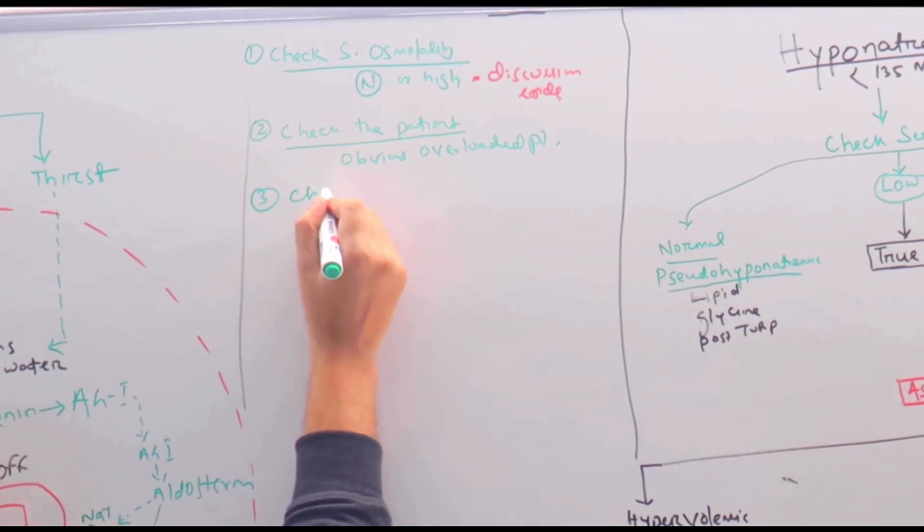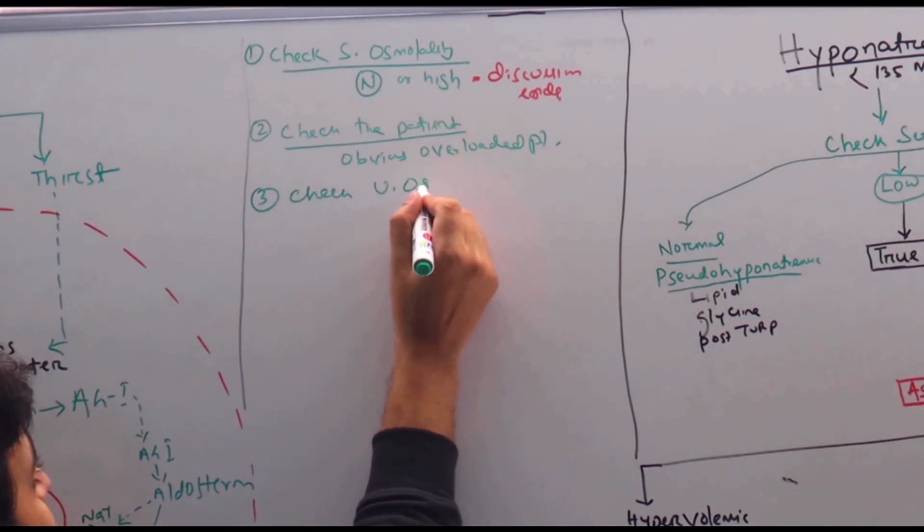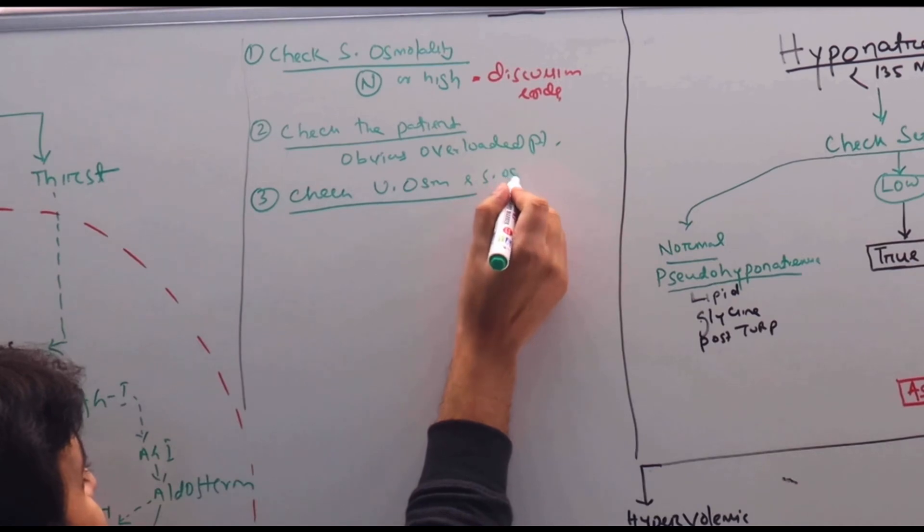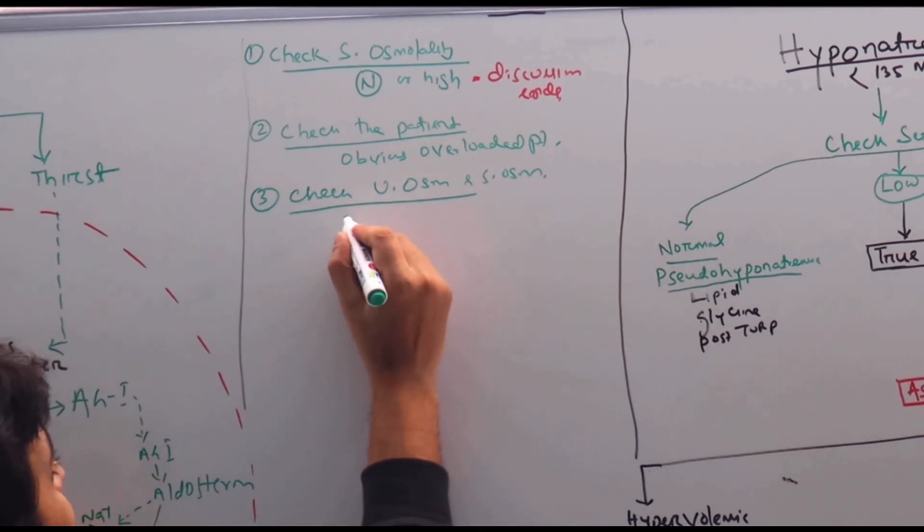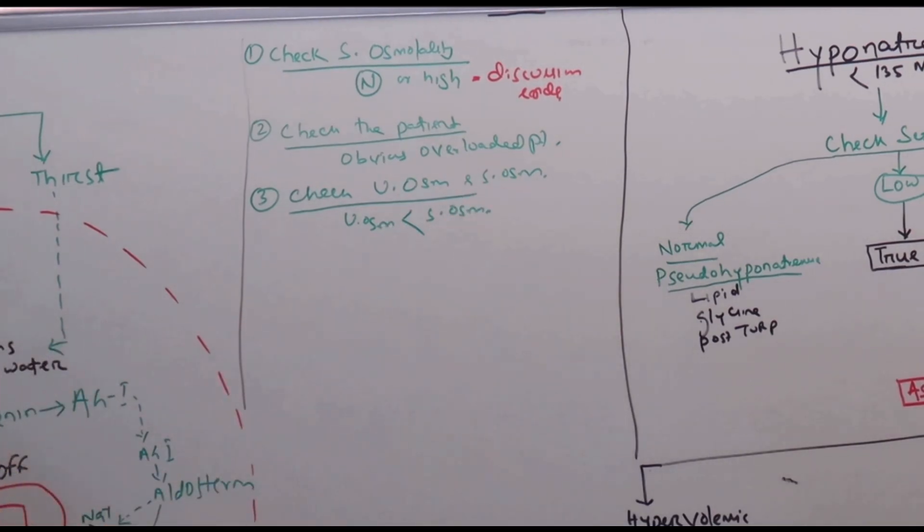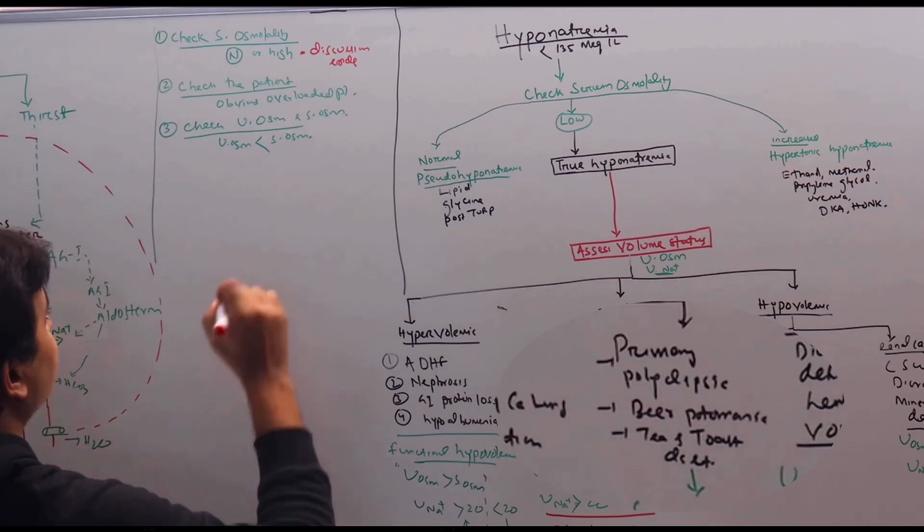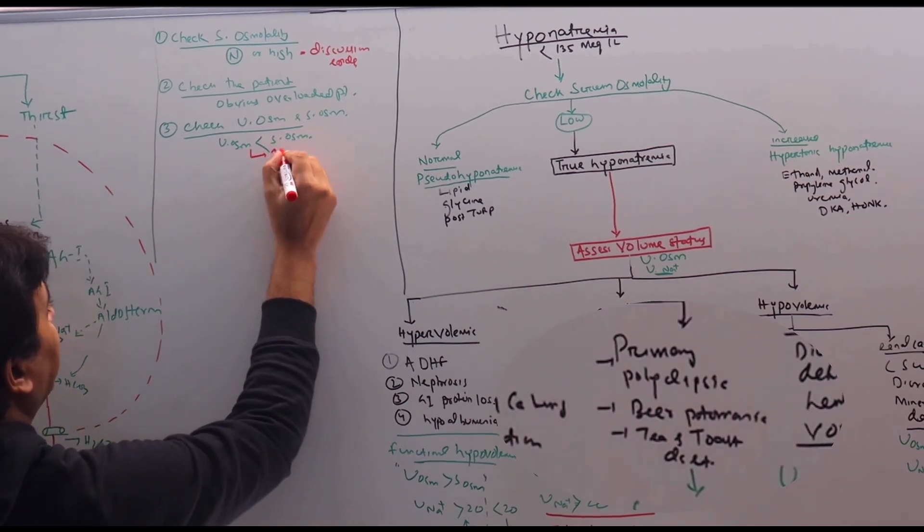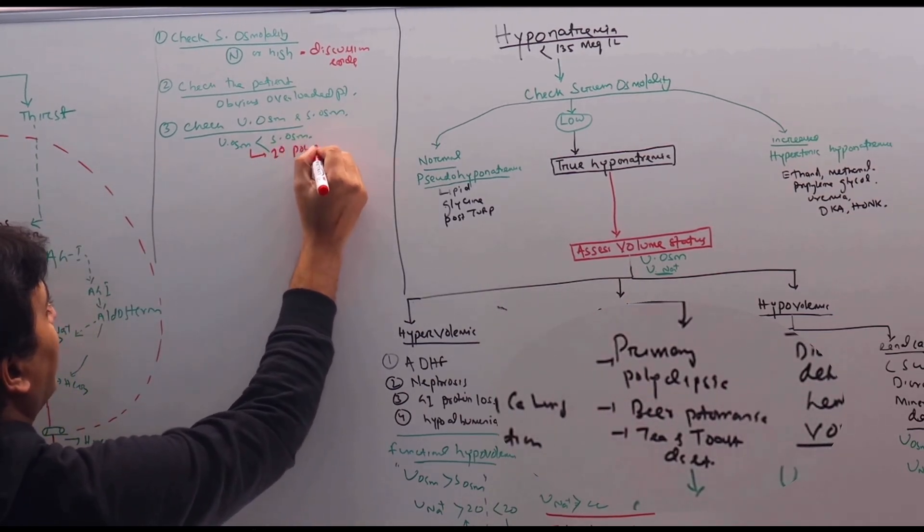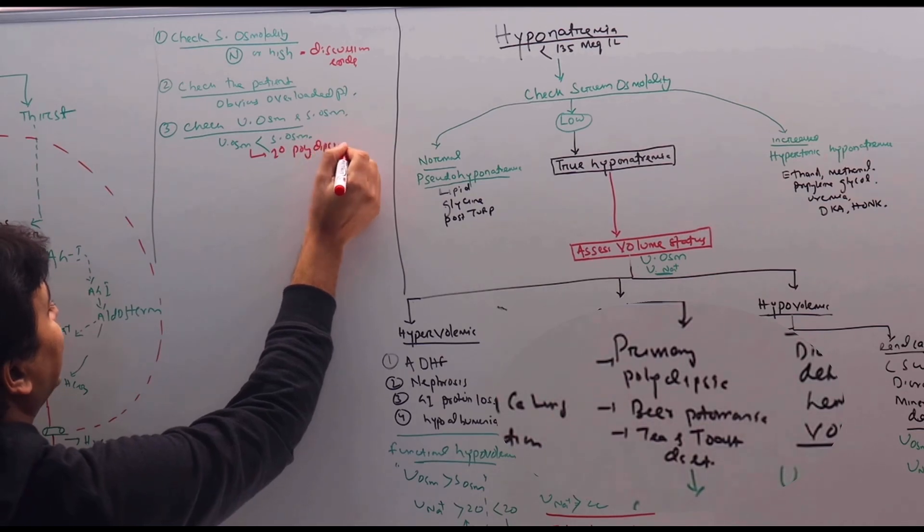Third is check urine osmolality and serum osmolality. If urine osmolality is less than serum osmolality, what does it mean? If there is dilute urine, then we have only one diagnosis. That is, it can be primary polydipsia and so on.